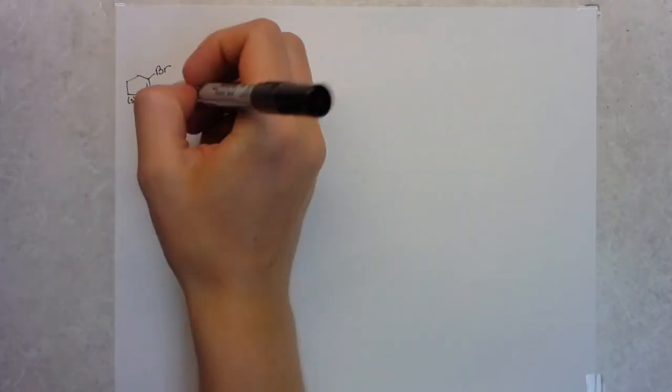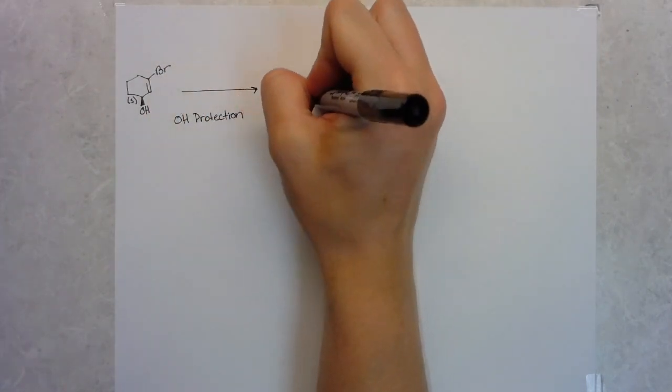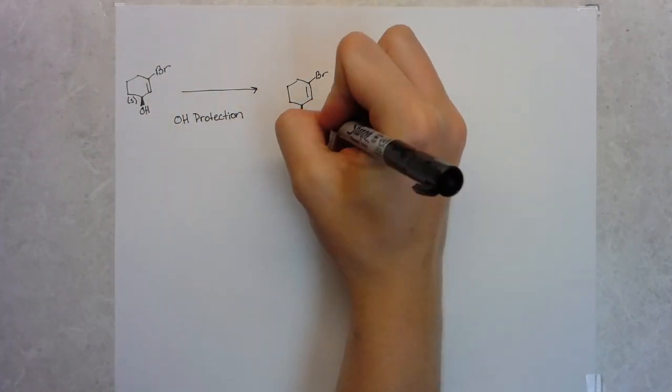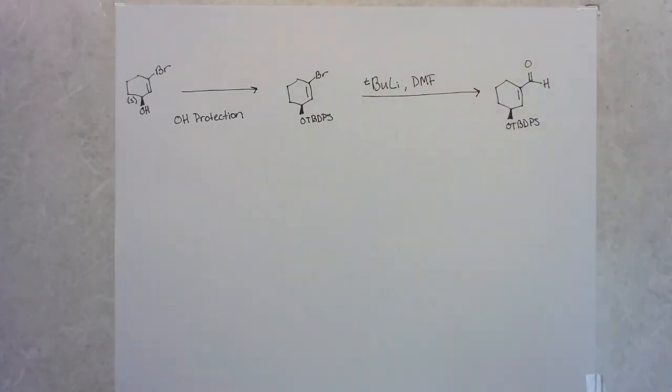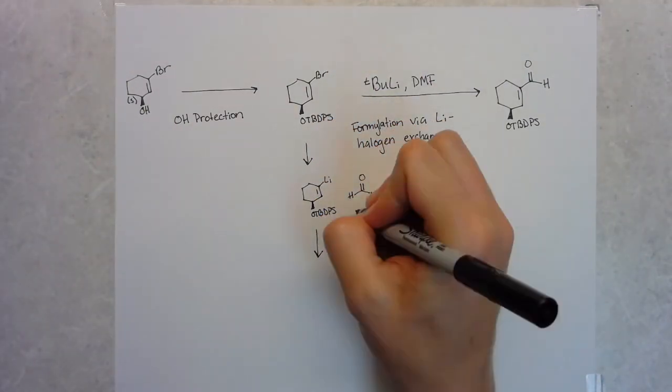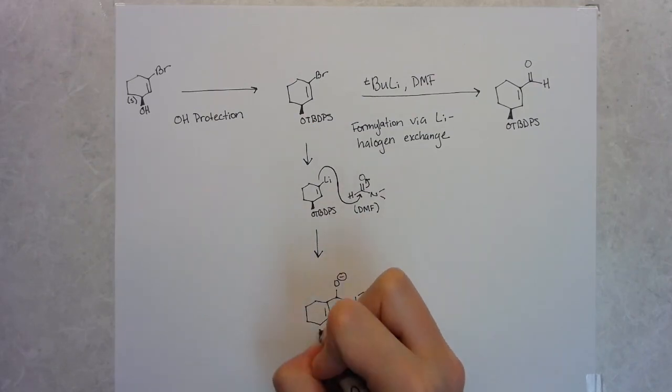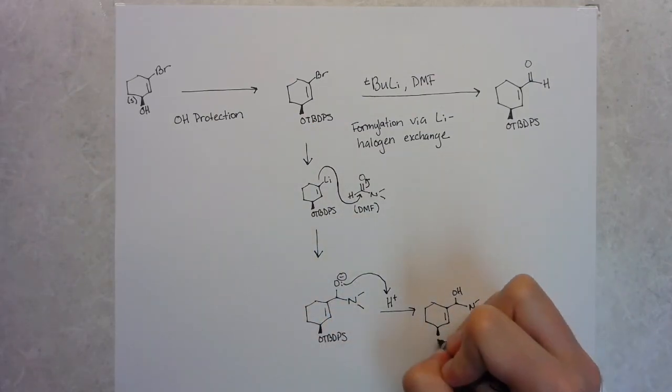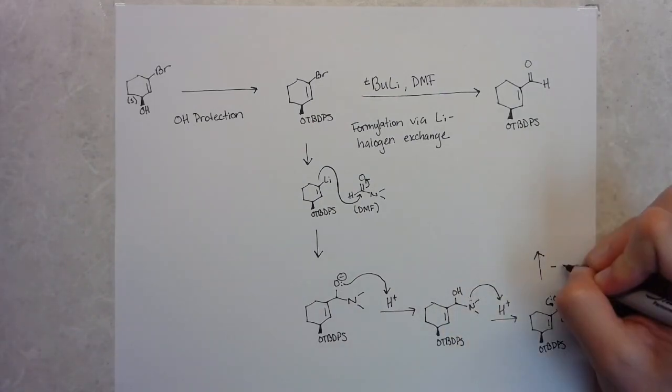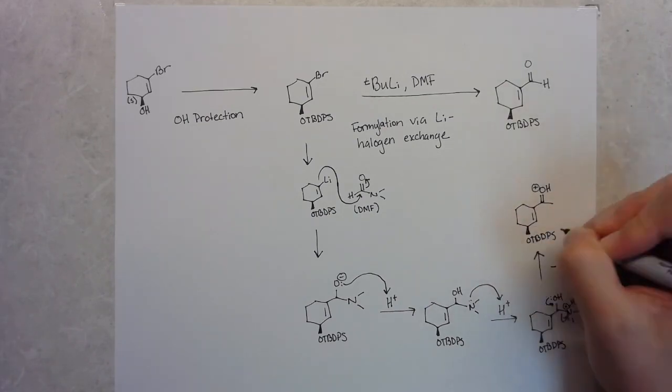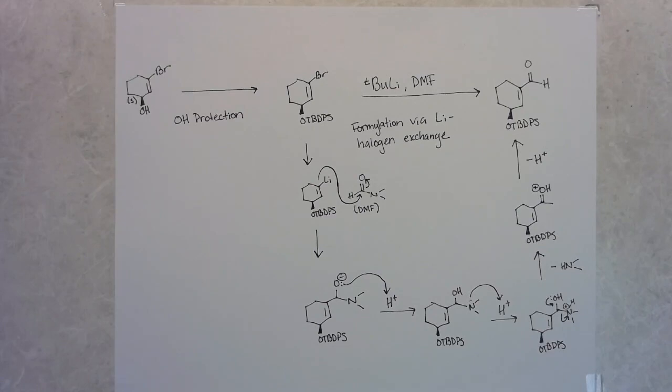So jumping right in, they start with a 1-bromo-3-hydroxyl-cyclohexene S-enantiomer and start off with a protection step to protect that alcohol. From there, they do a lithium halogen exchange with tert-butyl lithium, exchanging the lithium for the bromine, which then can react with DMF to form an aldehyde where the bromine originally was. One interesting point that Matt pointed out is that they were doing all of these first few steps on the decagram synthesis. They were using tert-butyl lithium, which is the most reactive of the butyl lithiums, on a decagram scale. Got to have some sure hands there.